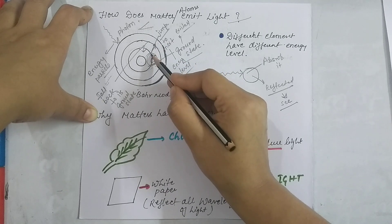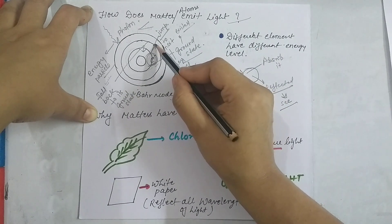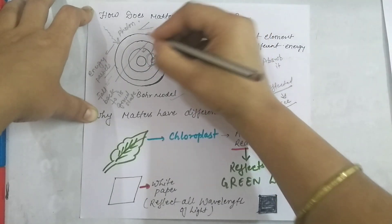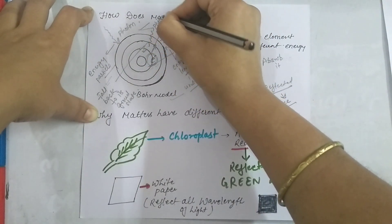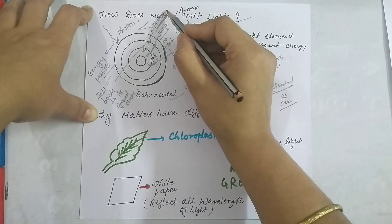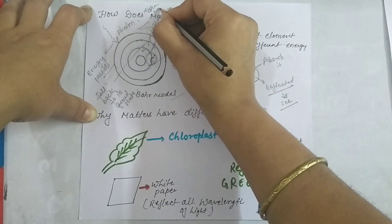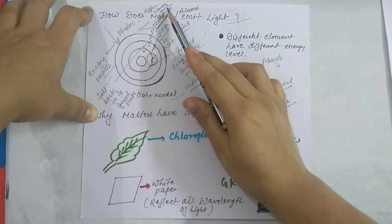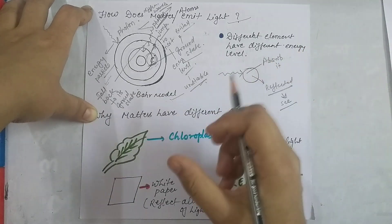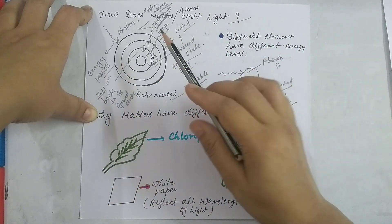When the excited electron falls back to the ground state — its own energy level — it produces a photon. The photon produced has a different wavelength or frequency. In this way we are able to see the particular color of the object. So we have understood how matter emits light: the atom emits photons of different wavelengths corresponding to the particular color of the object.